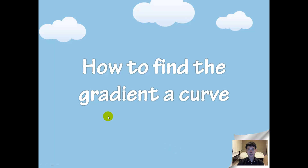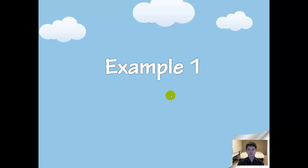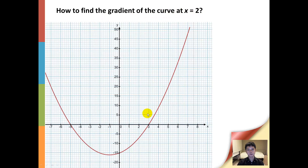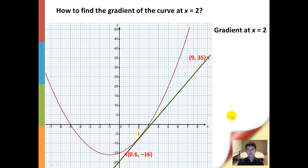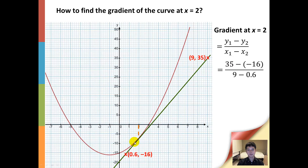Next, let us look at how to find the gradient of the curve using the tangent. In the first example, we are asked to find the gradient at x equals 2. Previously we have already drawn the tangent here. In order to find the gradient, we need to write down any two coordinates on the tangent. In this case, I will write down the coordinates (9, 35) and (0.6, -16). We will use the formula (y1 minus y2) over (x1 minus x2), giving us (35 minus negative 16) over (9 minus 0.6), which equals 6.07. Therefore, the gradient at this point is 6.07.